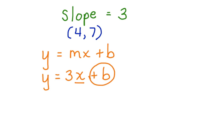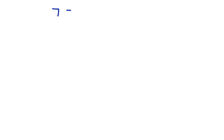We do know x and y, because here's an x value and here's a y value. Let's substitute 4 in for x and 7 in for y. We have 7 equals 3 times 4 plus our unknown, which is b.